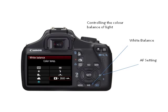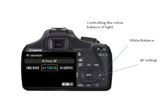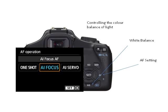Moving on to AF, which is autofocus settings. If you switch over to that, you'll see three options — some of you will have four: one shot, AI focus, and AI servo. One of our modules does cover that in more detail than we can go into in this module.